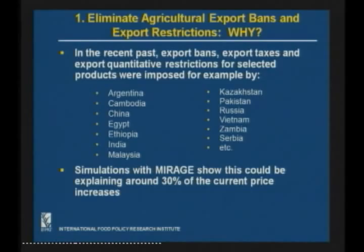Simulations on the major bans imposed using the Mirage model — a worldwide general equilibrium model — show that this could explain around 30% of the current price increases in the last months.